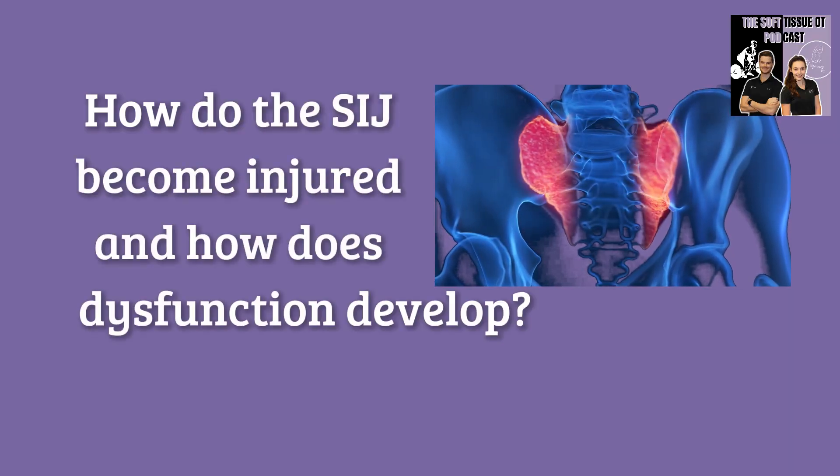Research has shown that SIJ dysfunction typically arises due to instability rather than stiffness. Unlike the lumbar spine, which can become overly stiff, the SIJ often moves too much when surrounding muscles fail to stabilize it properly, or when we're putting excessive strain on those joints. To be clear, I'm not talking about a significant visible amount of movement, and I'm not saying your SIJ is 'out' — that's not what I mean. It's a joint meant to be super stable, and when it becomes less stable, issues occur.